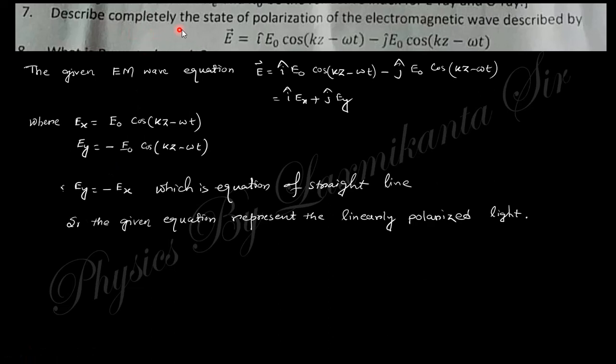Describe the complete state of polarization of the electromagnetic wave. This is Ex and this is Ey. These two give you this relation, which is the relation of a straight line. So this is plane polarized light.